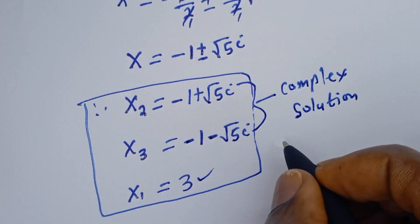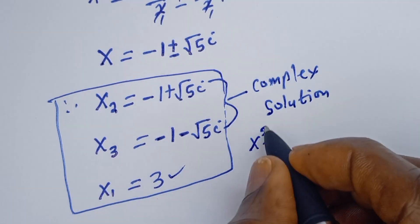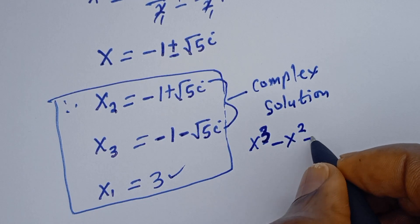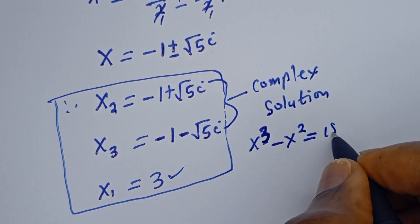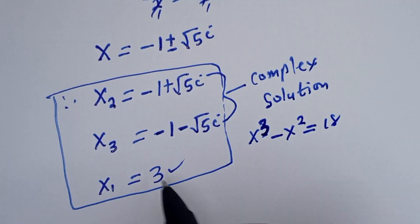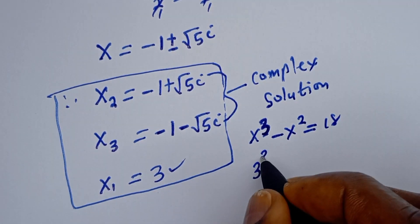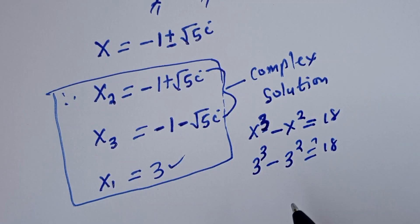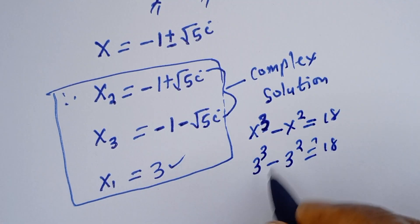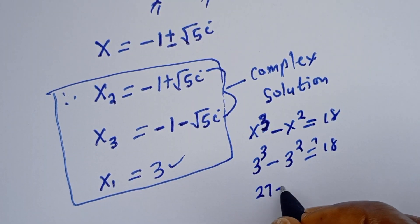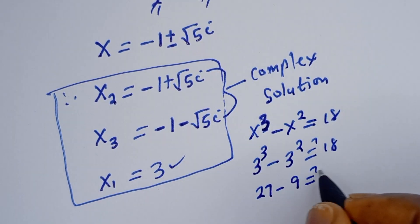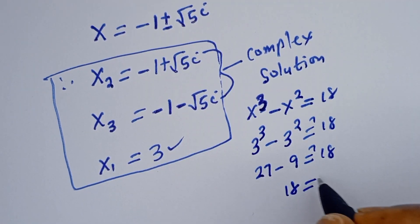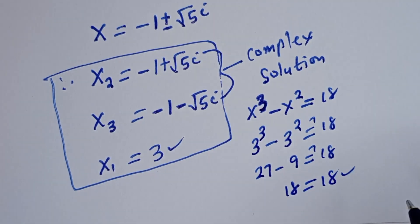If you want to verify, from the original equation s cubed minus s squared equals 18, when s equals 3, we have 3 raised to the power of 3 minus 3 squared, which must equal 18. That is 27 minus 9, which must equal 18. And 27 minus 9 is 18, which equals 18. This is true.